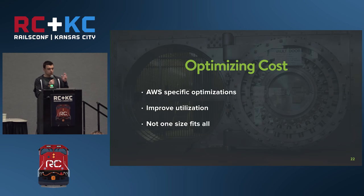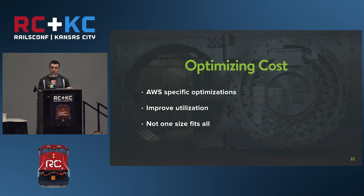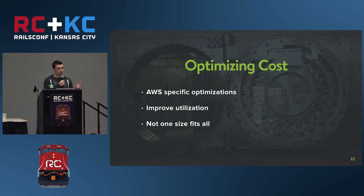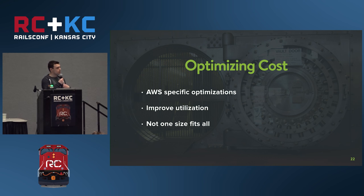We also kept cost in mind with AWS-specific optimizations: keeping instances booted for the full hour since Amazon bills by the hour, and using spot and reserved instances. We try to improve utilization — since machines can be booted for an hour even when capacity isn't needed, we allocate a dynamic number of agents: up to 100 for branch builds, up to 200 for master builds. That said, not one size fits all — for some companies, bare metal might be the right solution.